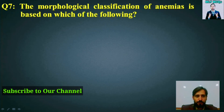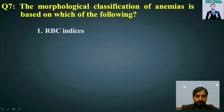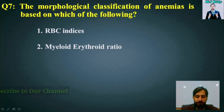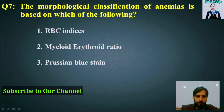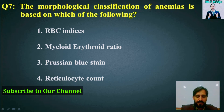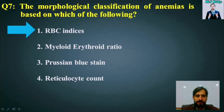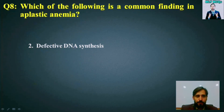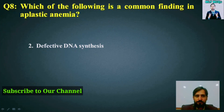MCQ number 7: The morphological classification of anemia is based on which of the following? Options are: RBC indices, myeloid-erythroid ratio, Prussian blue stain, or reticulocyte count. The right answer is option number 1 — RBC indices.